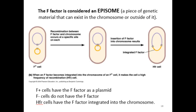The F-factor is considered an epizome — a piece of genetic material that can exist in the chromosome or outside of it as a plasmid. So an epizome is DNA that can be integrated into a chromosome, or it can exist in a cell outside of the chromosome, usually as a plasmid. In cells where the F-factor is located as a plasmid, we call that cell an F-plus cell. These cells carry what is called the F-plasmid or fertility plasmid, and it contains the F-factor.